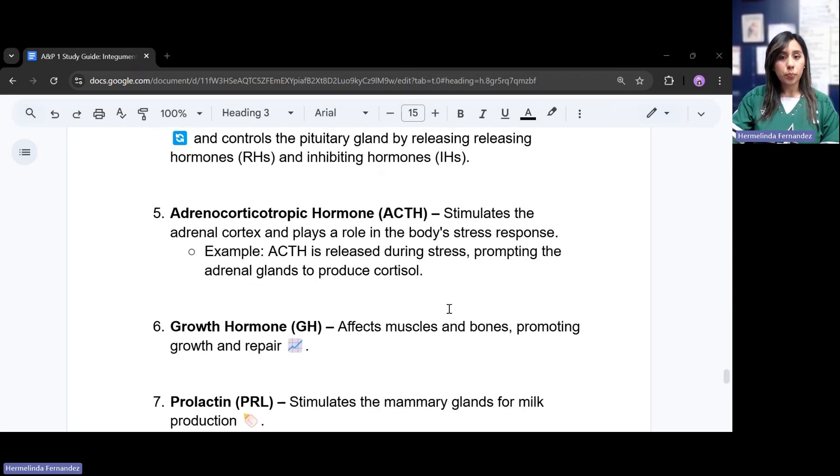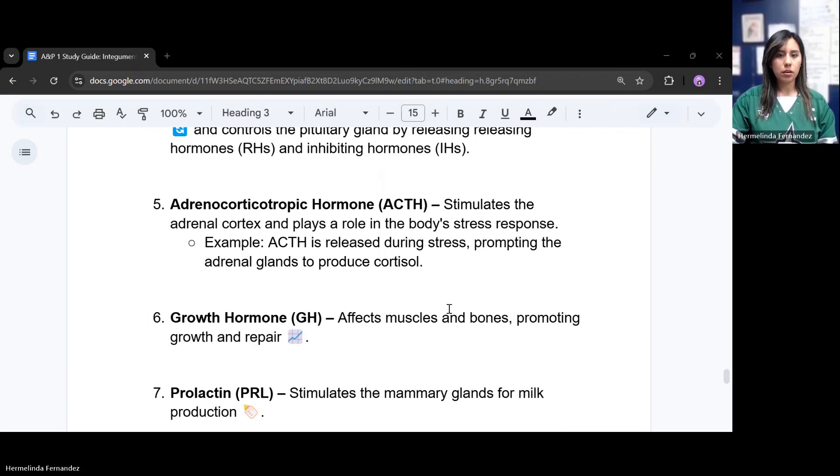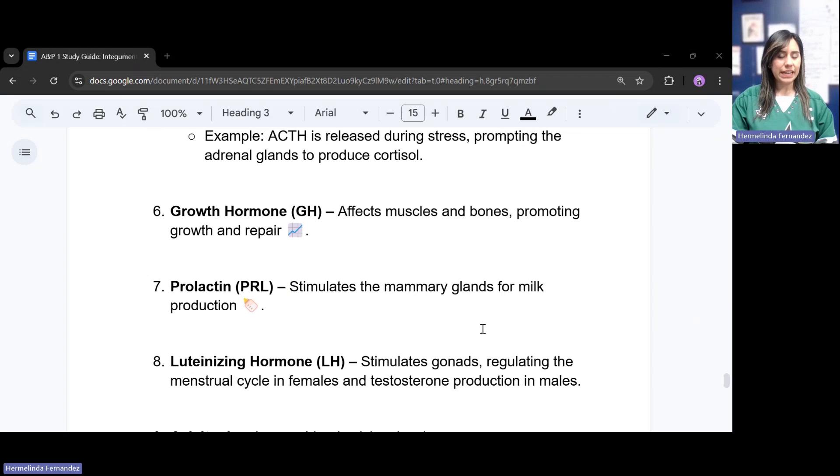The adrenocorticotropic hormone, or ACTH, stimulates the adrenal cortex and plays a role in the body's stress response. An example of this is that ACTH is released during stress, prompting the adrenal glands to produce that cortisol. Growth hormone, GH, affects the muscles and bones promoting growth and repair.